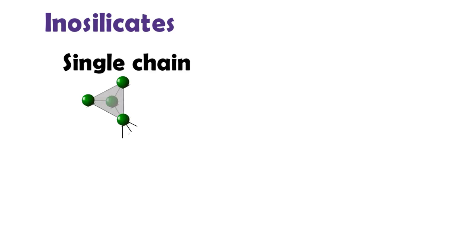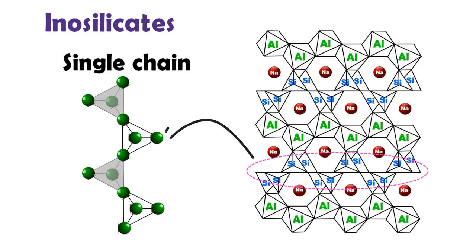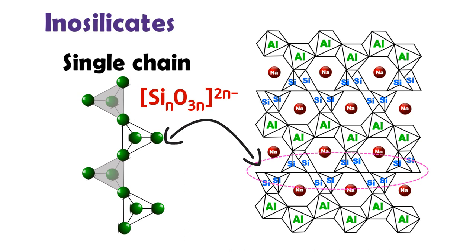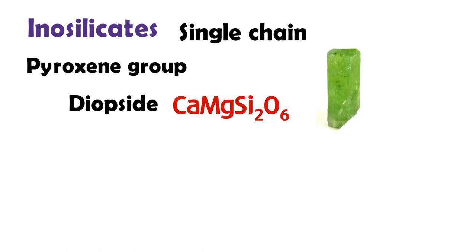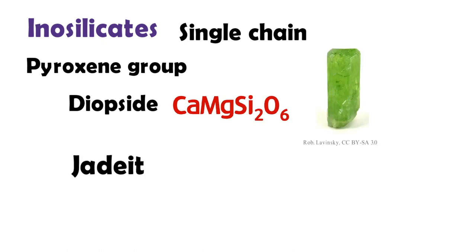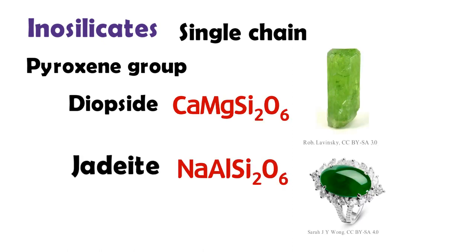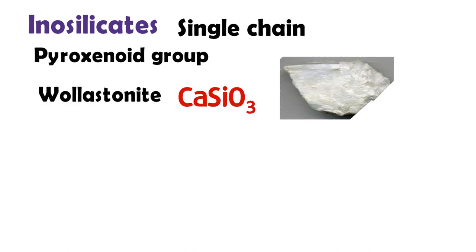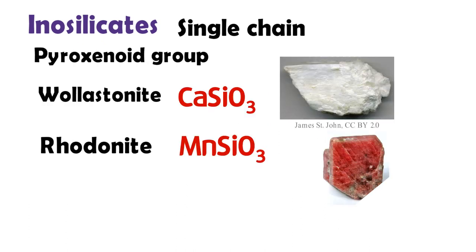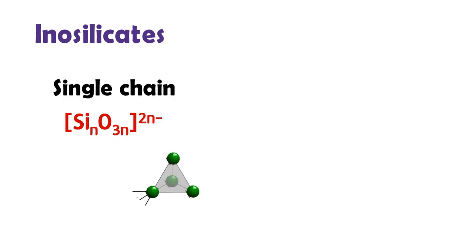Inosilicate, or chain silicate, have interlocking chains of silicate tetrahedra with either SiO₃. Inosilicate minerals having single chains are two groups: pyroxene and pyroxenoid. As gemstones, diopside and jadeite belong to the pyroxene group. In the pyroxenoid group, there are wollastonite, rhodonite, and pectolite.